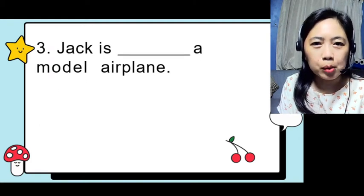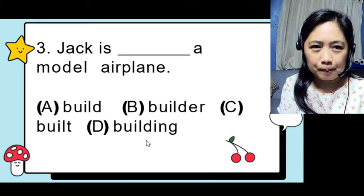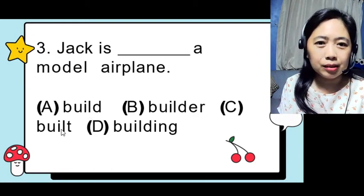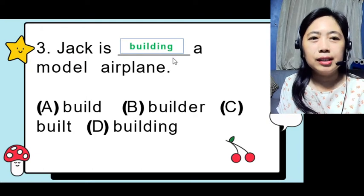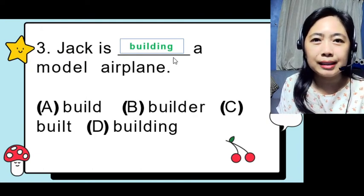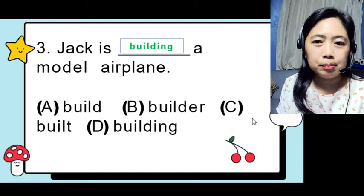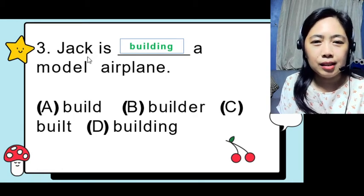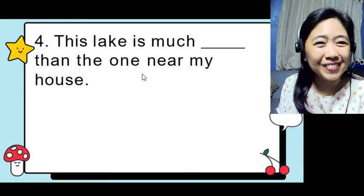Question three: 'Jack is ___ a model airplane.' Choices are: build, builder, built, building. Since we have 'is' as the linking verb, we need the continuous form. 'Jack is built' doesn't work — Jack is the subject performing the action. The correct answer is 'building.' Jack is building a model airplane — present continuous.